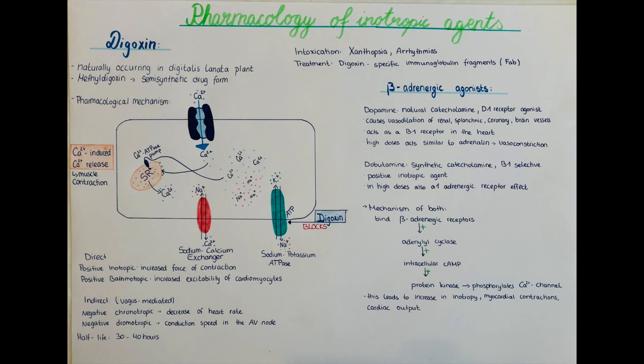The next class of medications are the beta-adrenergic agonists. We have dopamine, which is a naturally occurring catecholamine that acts as a receptor agonist to the D1 receptor. In low doses it leads to vasodilation of the kidneys, the renal artery, the splanchnic, coronary, and cerebral vessels. However, in high doses it acts on B1 receptors in the heart, leading to effects similar to adrenaline — including vasoconstriction of all these vessels.